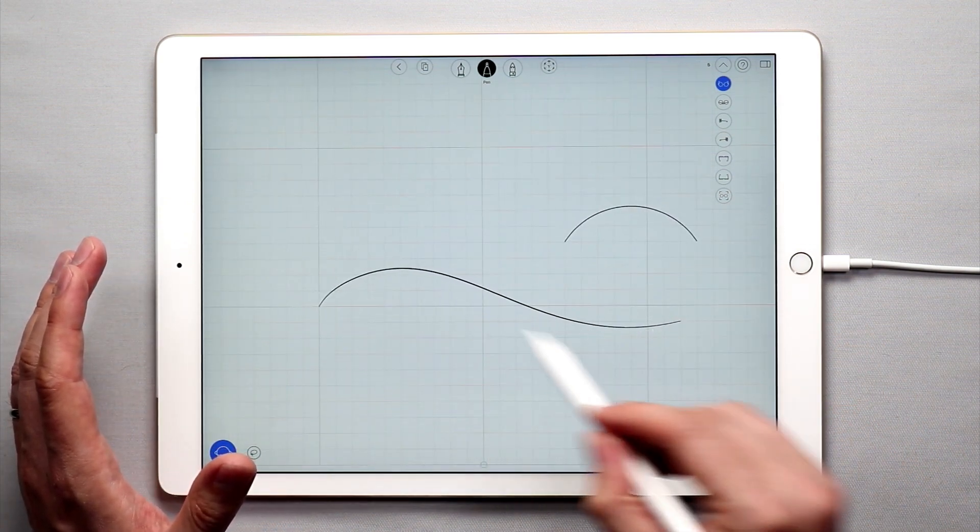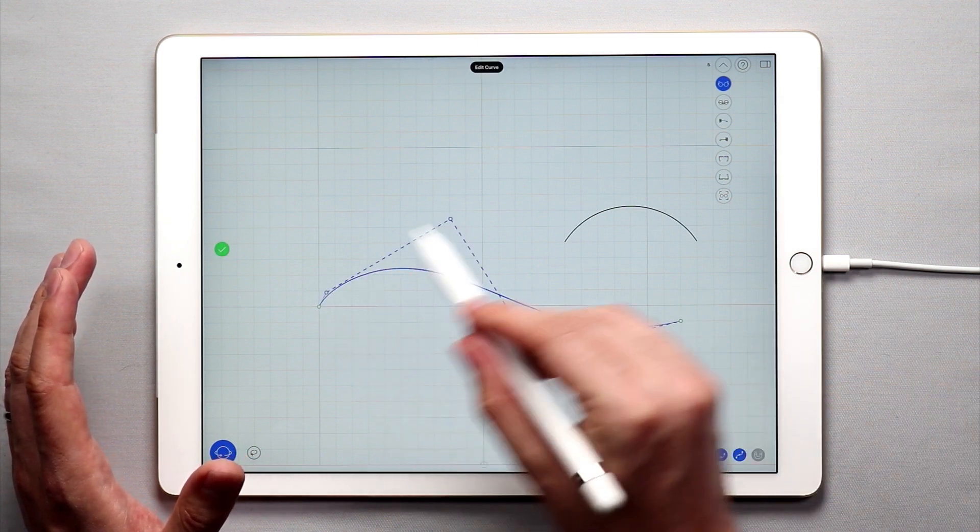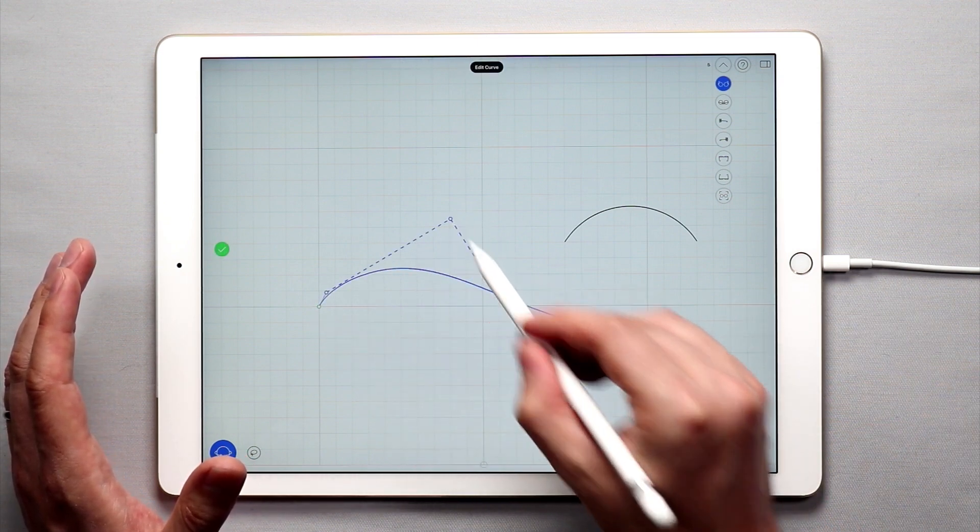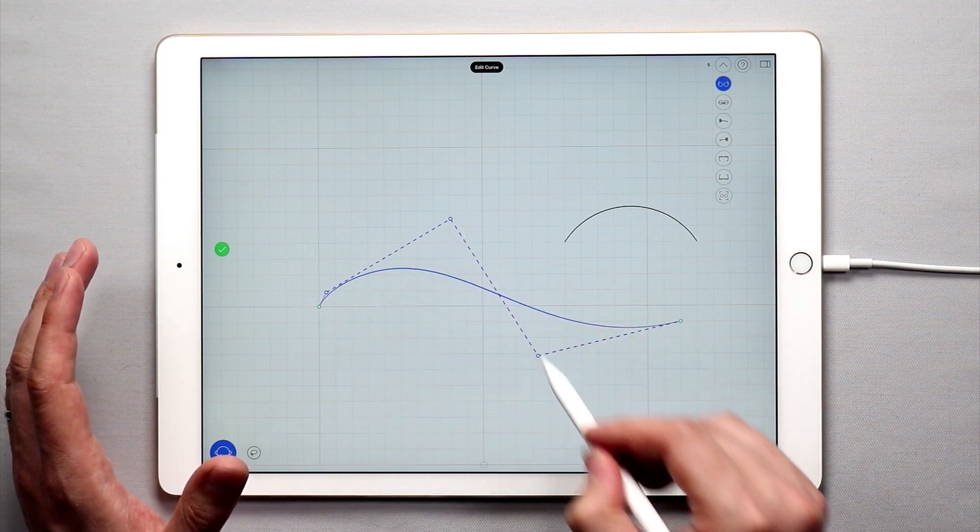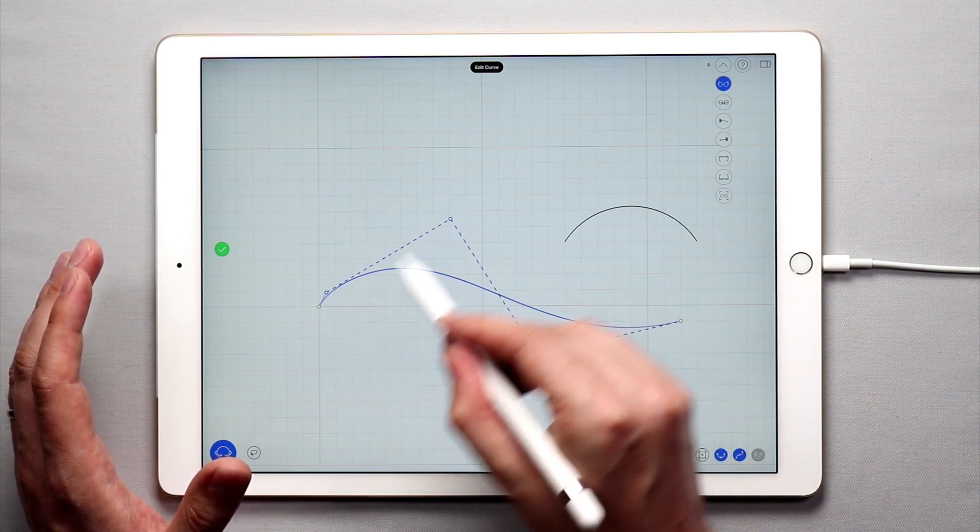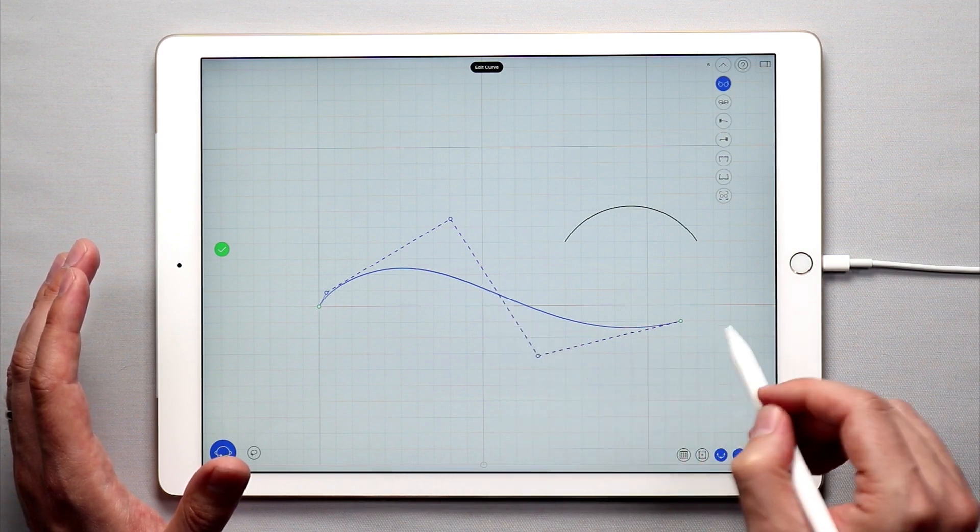If you want to edit just one curve, simply tap once on any curve and you will see the control points. They are the little points here, and in between these control points you see these dashed lines and that's basically the math behind the shape of the curve.